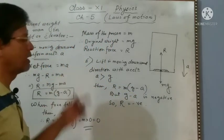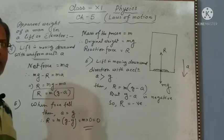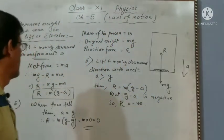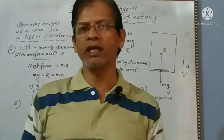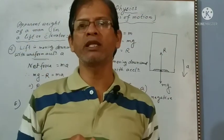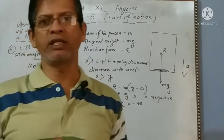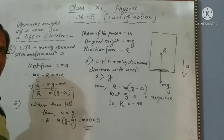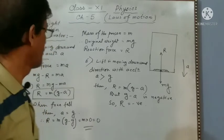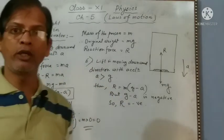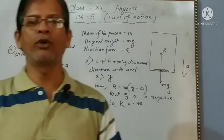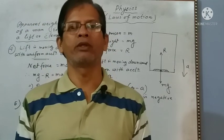These are the six cases. First, lift is stationary. Second, lift is moving upward or downward with uniform motion. In these two cases, apparent weight equals original weight. Third, lift moving upward with acceleration A: R equals m(G plus A), weight increases. Fourth, lift moving downward with acceleration A: R equals m(G minus A), weight decreases. Fifth, free fall: weight is zero, cord is cut. Sixth, downward acceleration greater than G: weight is negative, persons stick to the ceiling.